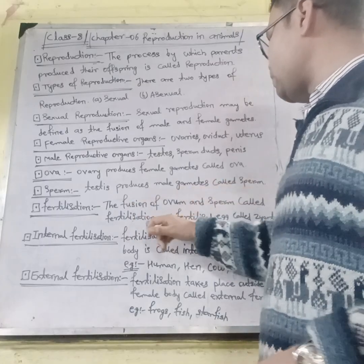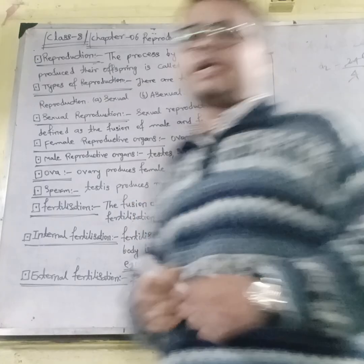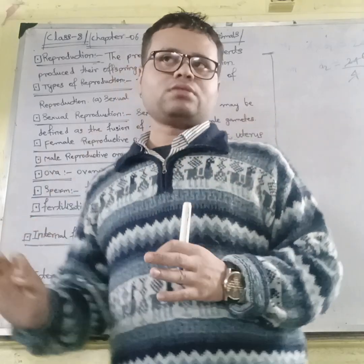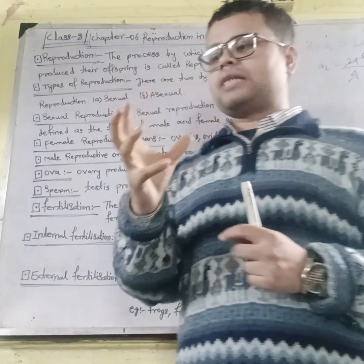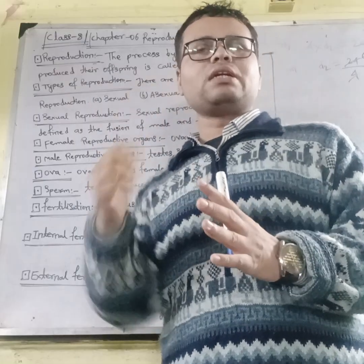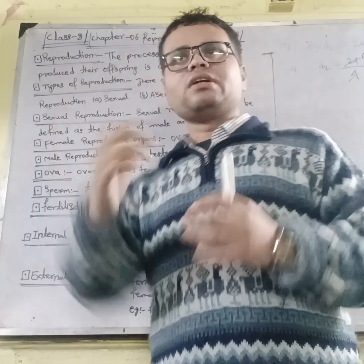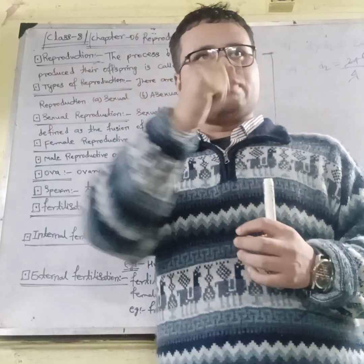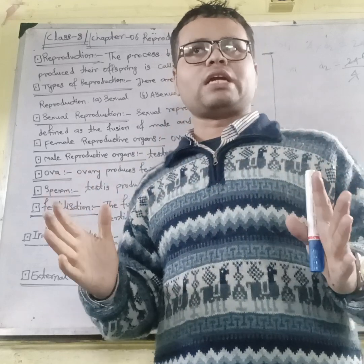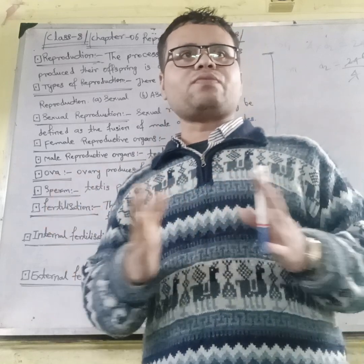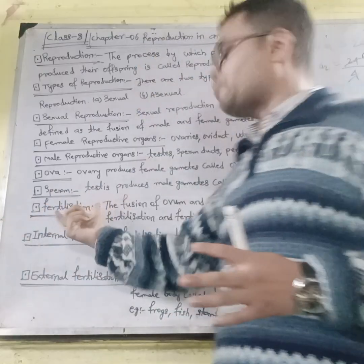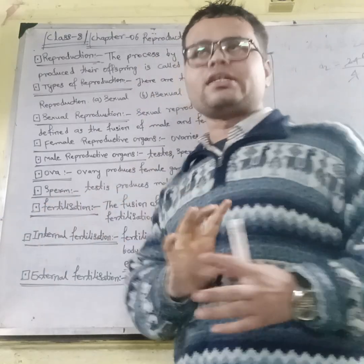What is fertilization? The fusion of ova and sperm is called fertilization, and the fertilized egg is called a zygote. After fertilization, the zygote is formed. When male and female gametes combine, fertilization occurs, and the fertilized egg — also called the zygote — is produced.